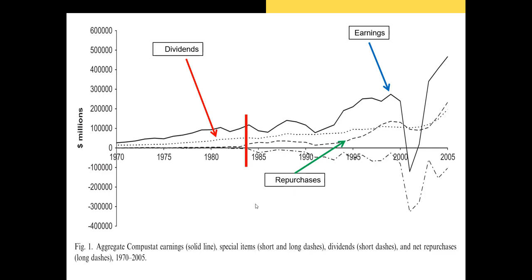Repurchasing shares allows a firm to distribute cash to shareholders while keeping the share price high — and the SEC prior to 1984 saw this as an illegal act. In 1984, however, a law called the Model Business Corporation Act was revised, making it harder for shareholders to sue the firm for stock price manipulation. Since then, repurchases have become the main method for firms to distribute cash. In recent data shown on a chart, the dotted line representing repurchases overtook dividends, and since 2005 repurchases have increased tremendously. Dividends now represent a smaller total dollar value of cash returned to shareholders than repurchases.